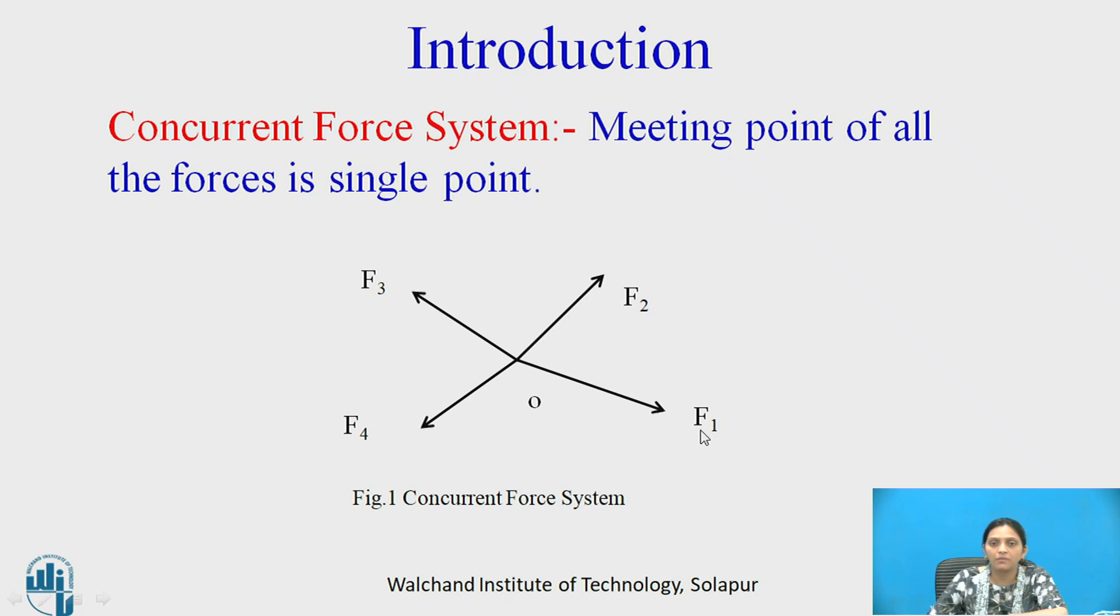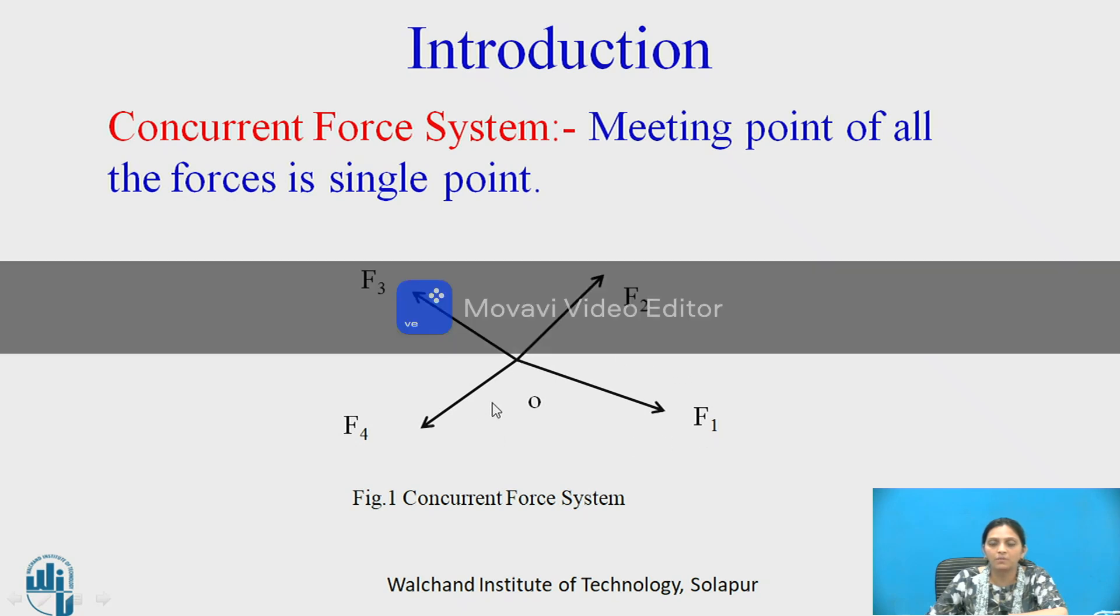Concurrent force system is all the forces are meeting at one single point. In the figure shown, F1, F2, F3 and F4 are meeting at a single point O, so this is a concurrent force system.